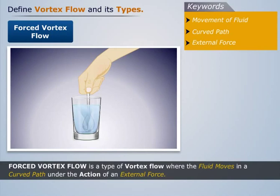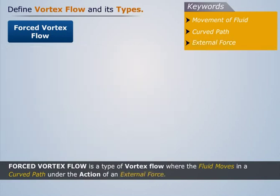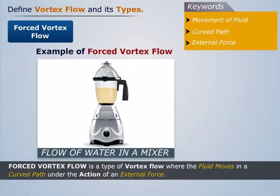Forced vortex flow is a type of vortex flow where the fluid moves in a curved path under the action of an external force. Another example of forced vortex flow is flow of water in a mixer.